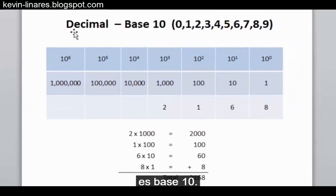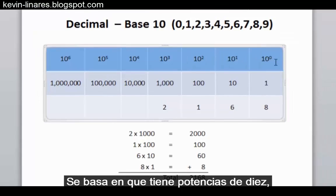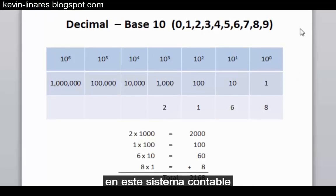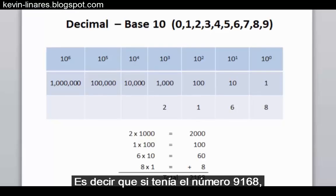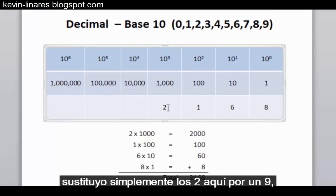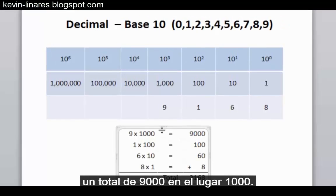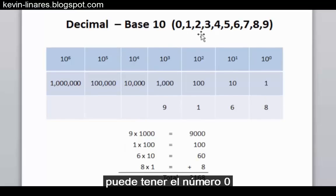The decimal system is base 10. It's based on the fact that you have powers of 10, but more importantly you have 10 characters or 10 numerals in this counting system from 0 all the way up to 9. So that means that in each place value, you can have anywhere from the number 0 up to the number 9. In other words, if I had the number 9,168, I'd simply replace the 2 here with a 9 and now I have 9 one-thousands totaling 9,000 in the one-thousands place.